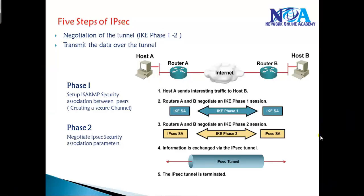In this section we'll majorly discuss IKE Phase 1 configurations. In the previous section we have seen the complete overview of the IPSec process — it goes in five steps and there are IPSec security association parameters which are negotiated in Phase 1. Now let's talk about Phase 1.